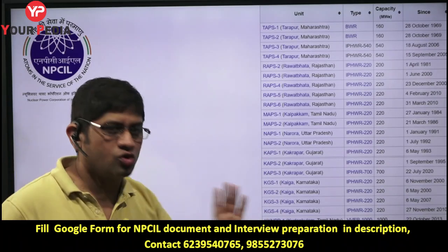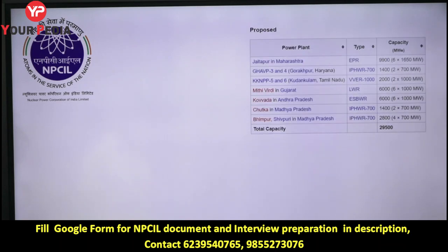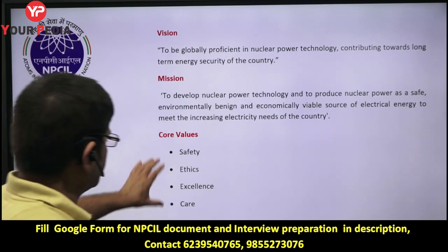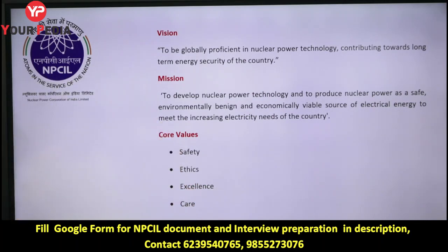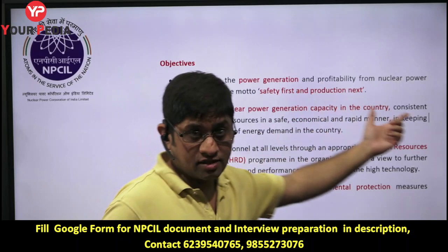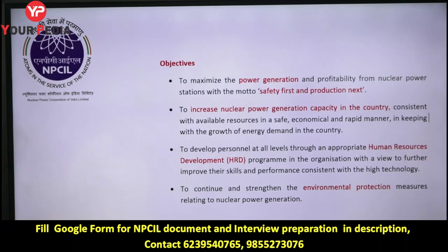You should know the reactor locations. There are also under-construction reactors in Gujarat and Rajasthan, and some proposed reactors in different states. You should know the vision of NPCIL, the mission of NPCIL, and the core values: Safety, Ethics, Excellence, and Care. Safety and ethics are closely related. The core values reflect what kind of industry this is. The main objective is safety first, production next — obviously expected from a nuclear power reactor.